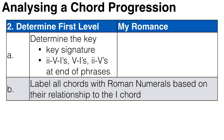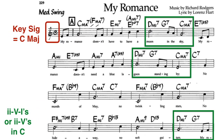Next we look at the first level chord progression. First we determine the key: find the key signature and look for cadences at the end of phrases or sections — look for 2-5-1s, 5-1s, or incomplete 2-5s that resolve to the one at the beginning of the next section. These things will help you determine the key, and then we label all chords with Roman numerals based on their relationship to the tonic chord.